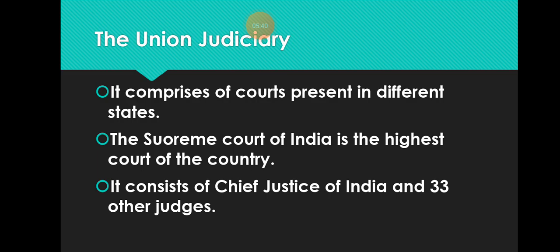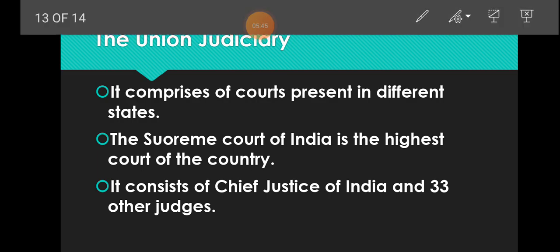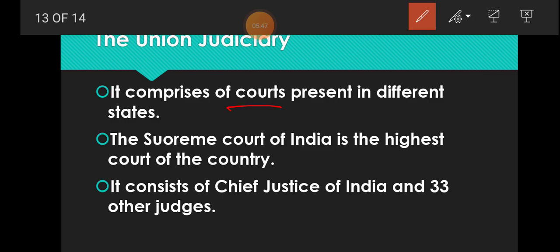Now, union judiciary. This branch has a number of courts present in different states, and the highest court of India is the Supreme Court. If a person is not satisfied with the decision of the high court, they can approach the Supreme Court. It consists of the Chief Justice of India and 33 other judges.